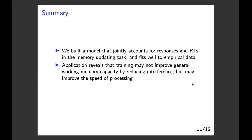In summary, we built a hierarchical Bayesian model that jointly accounted for both responses and reaction times in the memory updating task. This model was able to fit well to empirical data and can reflect some of the characteristics in working memory. Our application to the dataset of interest reveals that working memory training may not improve general working memory capacity by reducing mutual interference, and as a result, it cannot be transferred to improve the performance in other tasks. However, working memory training might be able to improve the general speed of processing, which could benefit performance in other untrained tasks.